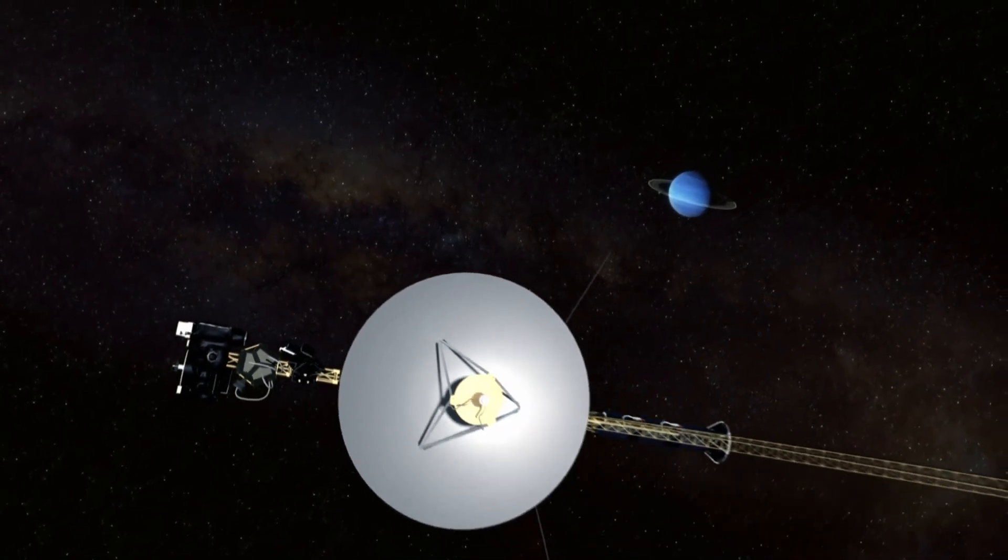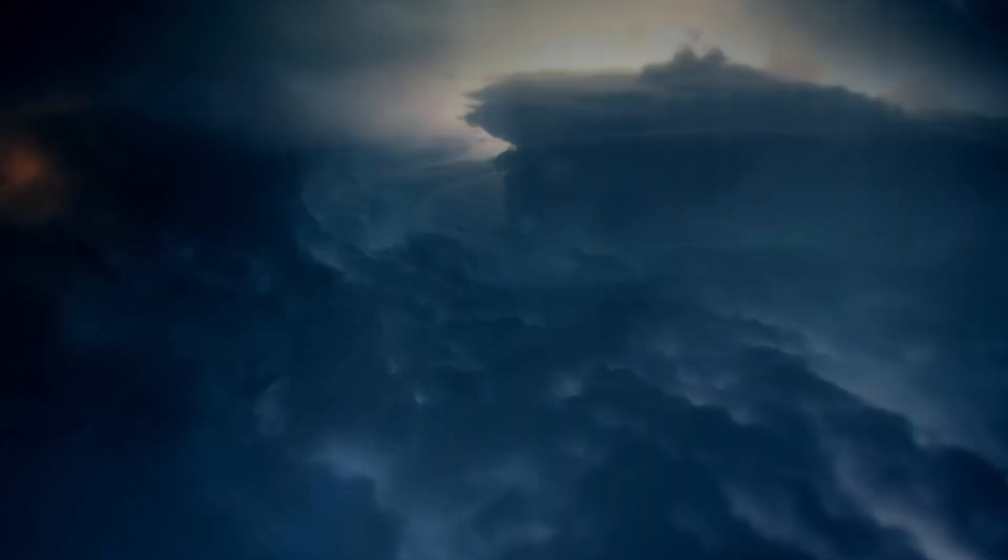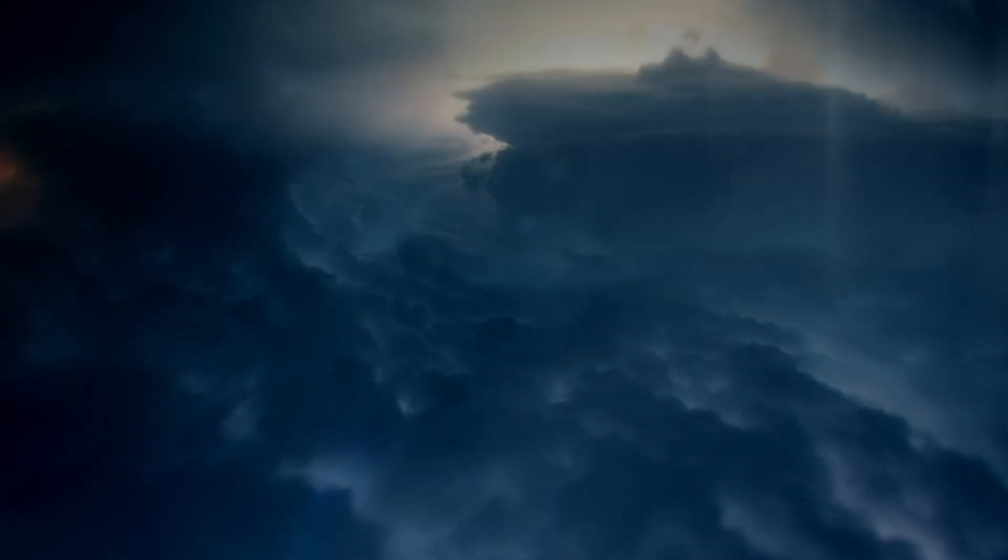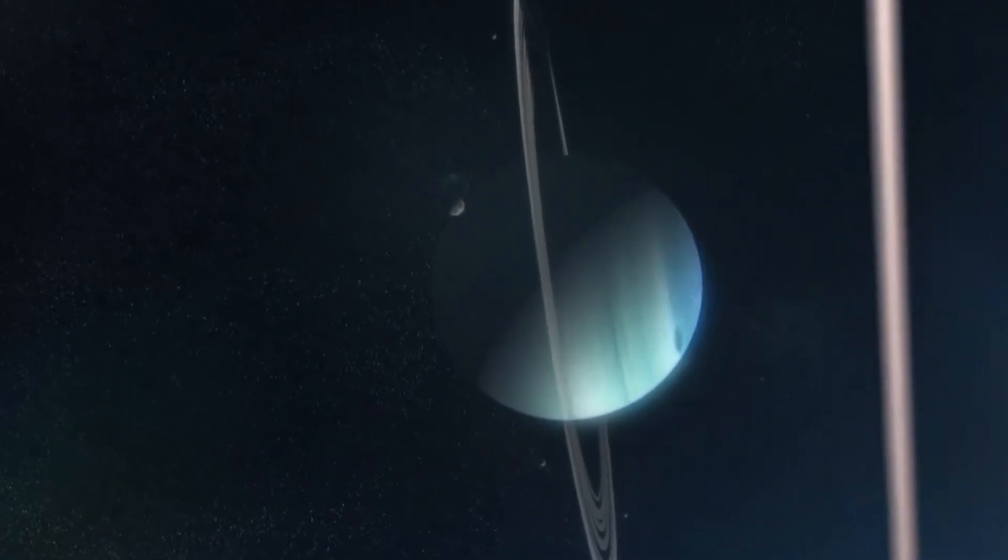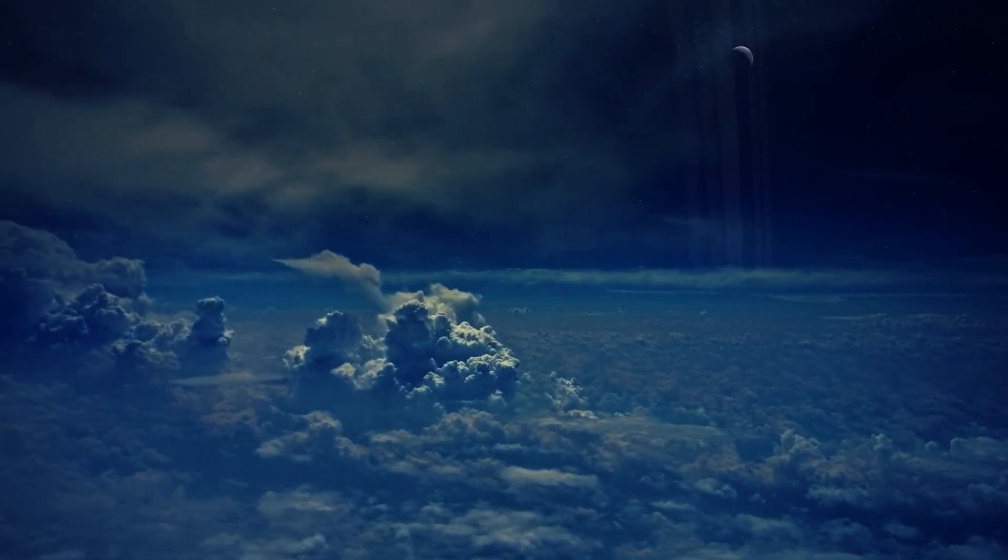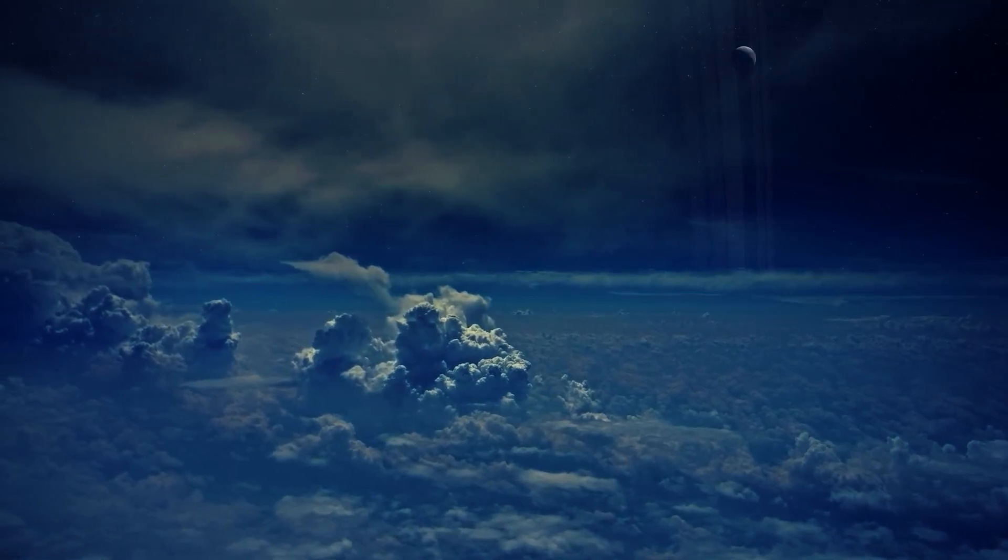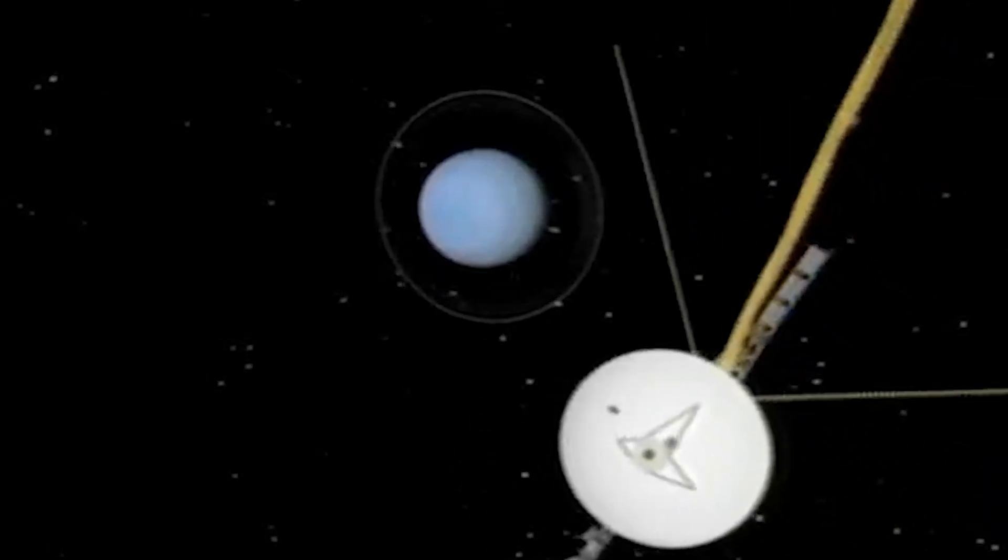Voyager's data also unveiled the presence of distinct layers of clouds within Uranus' atmosphere. These layers, composed of a mixture of methane, ammonia and other hydrocarbons, displayed different colours and compositions. The highest visible cloud layer appeared blue, while deeper layers exhibited shades of green and yellow. The precise mechanisms driving the formation and dynamics of these clouds continue to be a subject of ongoing investigation.